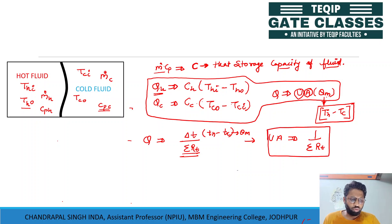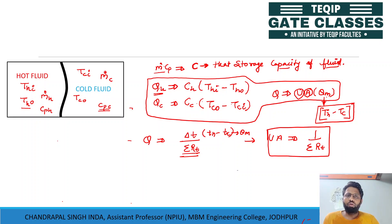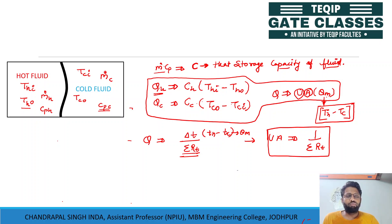We discussed the fouling phenomenon of the heat exchanger. Fouling represents a decrease in the performance of the heat exchanger due to the deposition of unwanted particles or impurities on the separating wall that separates the fluids, causing the performance and overall heat transfer coefficient to decrease.